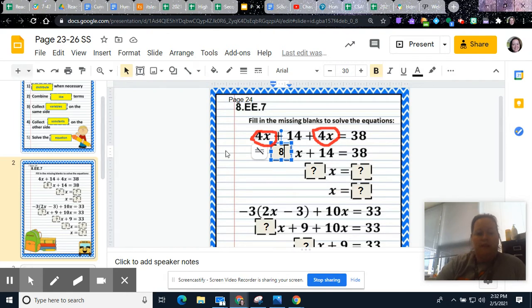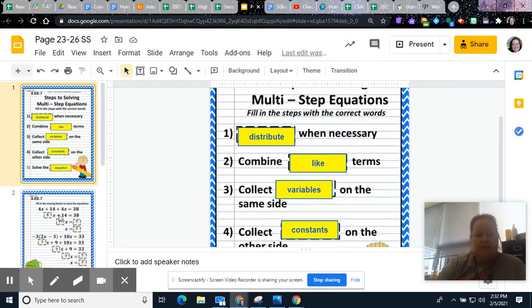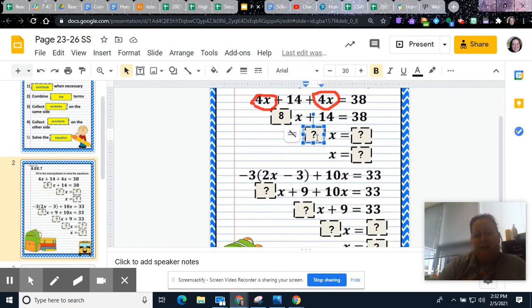Next thing you're going to do is you want to put your variables, so you go back in here, collect your variables on the same side. But when you look at this, all of your variables are already on the left. So then you want to be able to move your constants to the other side. So you're going to do the opposite of whatever it says. So since this says plus 14, you're going to subtract 14 from both sides. And so then you're left with 8x equals 38 minus 14 is 24.